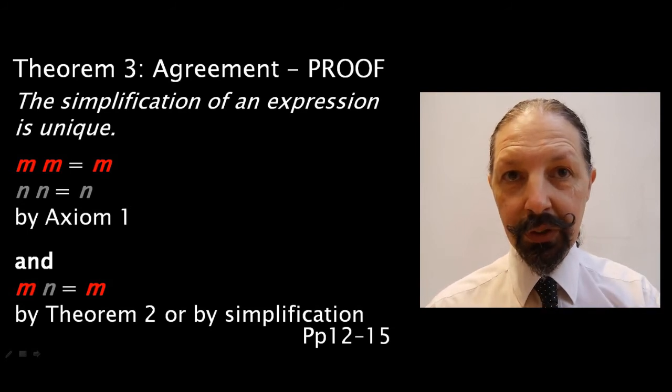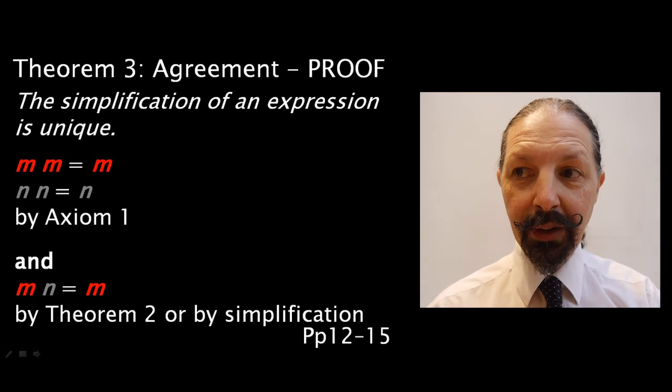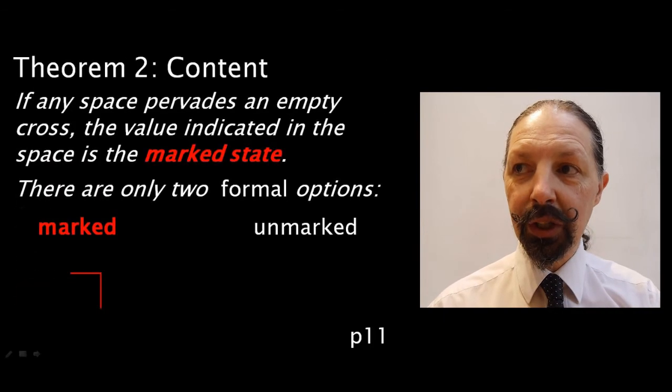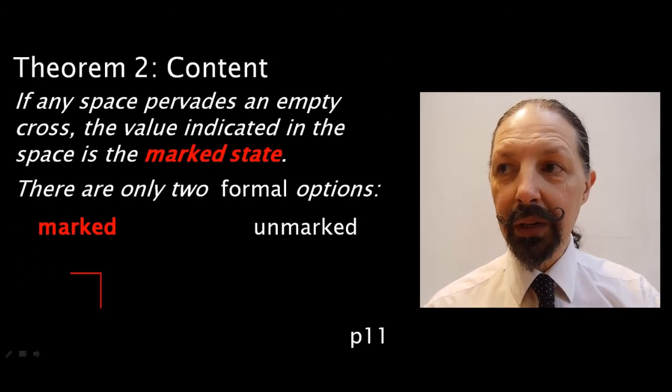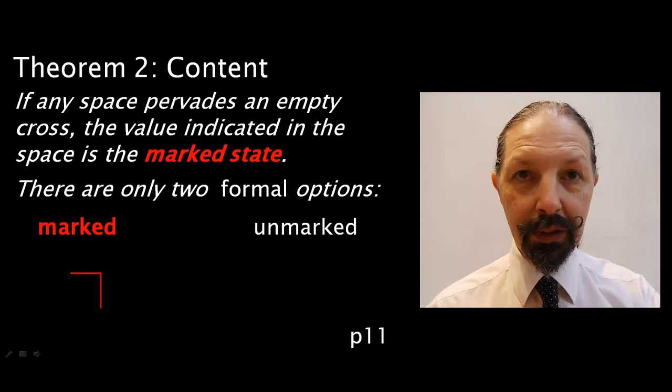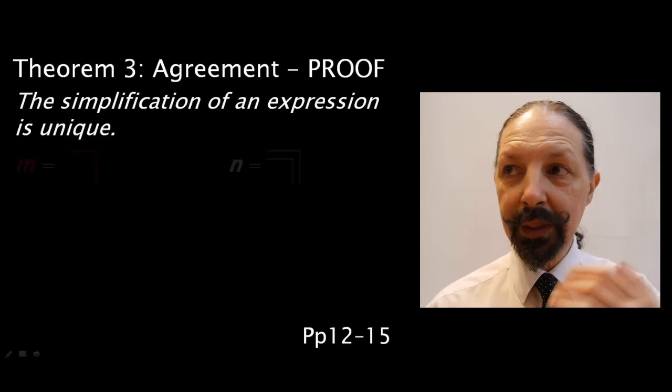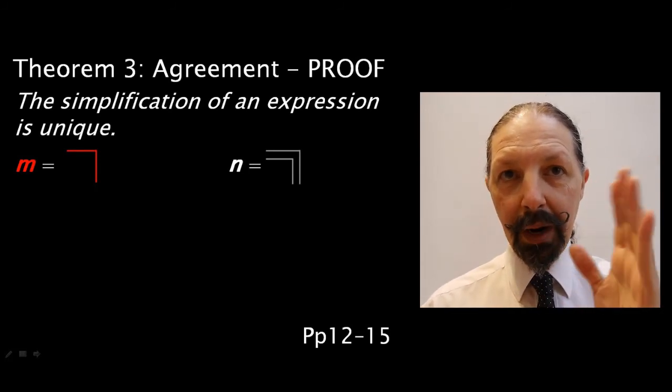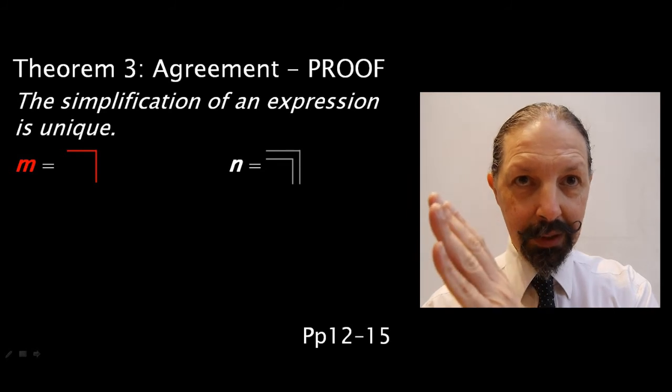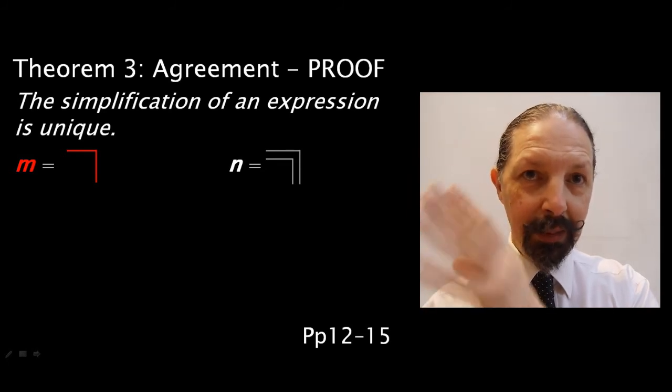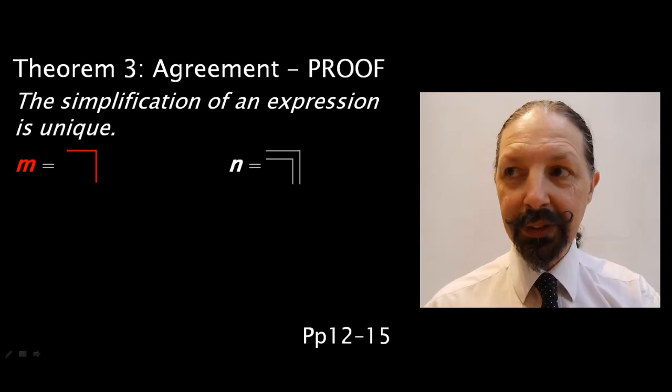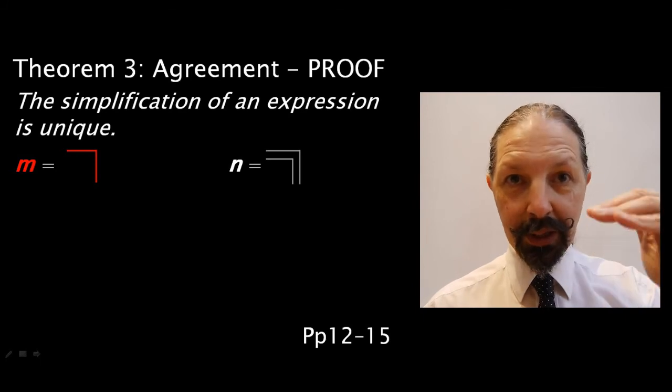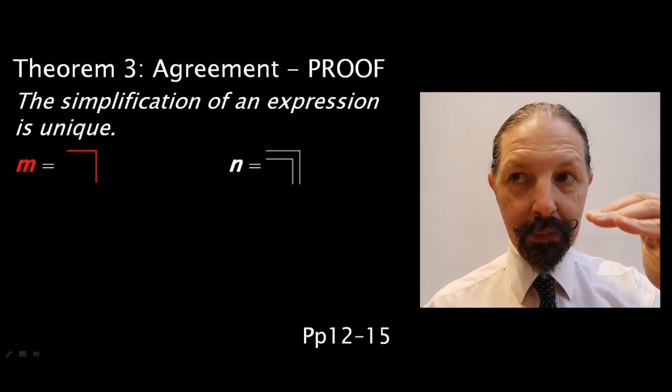And if you have two different values of expression side by side, they will always reduce to a marked state. And we know that by theorem 2 or by simplification. We'll look at both options. Let's remind ourselves of theorem 2. There are only two formal or simple options, marked or unmarked. The simplification of an expression is unique. And we know this because if you have marked and unmarked expressions side by side, the unmarked cancels and you're left with the marked. But what happens if you have either a marked expression or an unmarked expression under a cross? Like this.